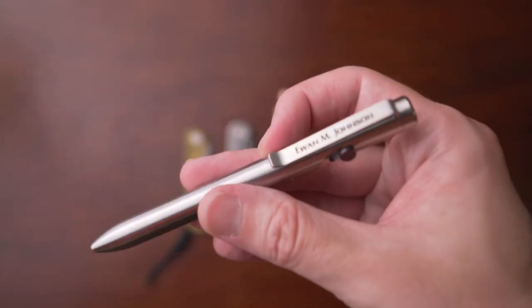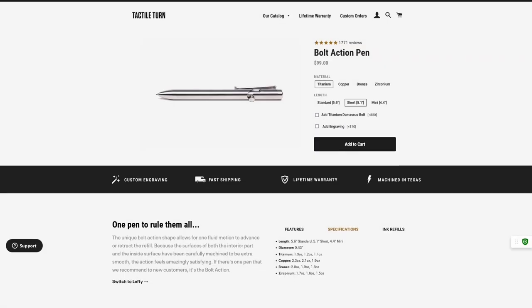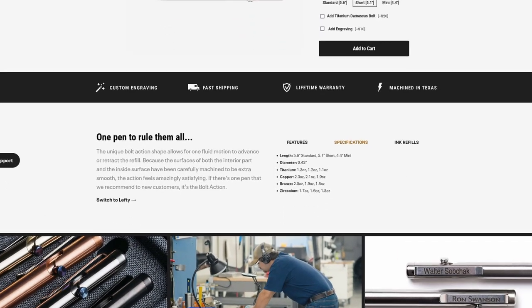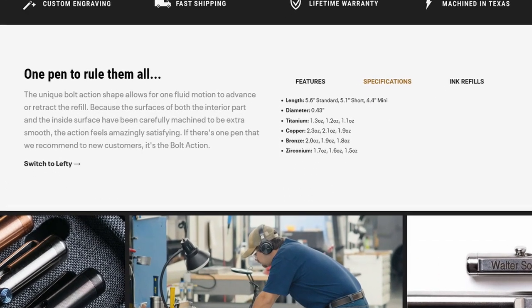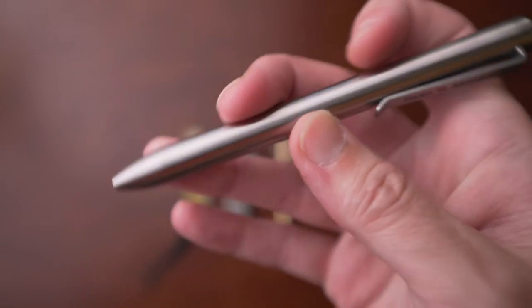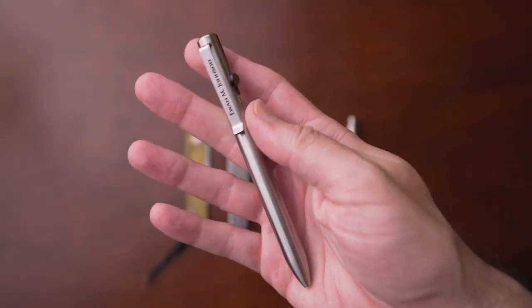All right, next is their bolt action pen. Now this one is in the short size. It's also made of titanium. The weight on this is 1.2 ounces. It's just a little bit larger than the mini and doesn't really sacrifice anything to be that. So it's a great medium ground.